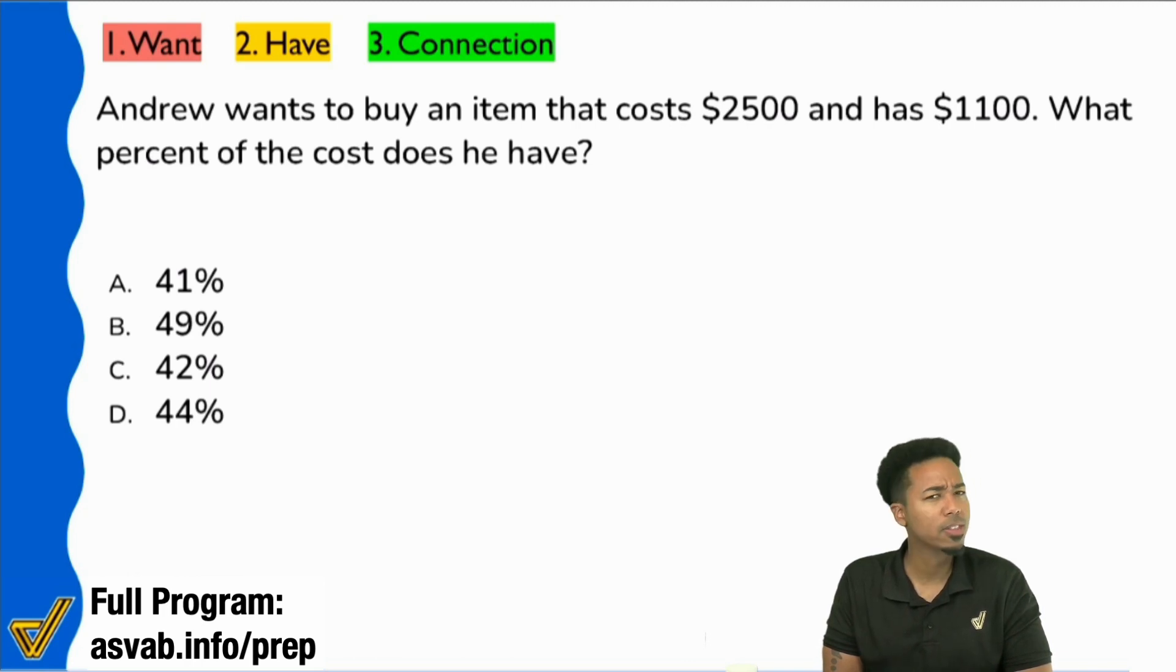Right, we're looking for a percent this time. Typically, we're trying to find the amount, right? Not always money, but we're trying to find that amount, either the beginning amount or the end amount, the original or the result. But this time, we're actually trying to find the percent. So that's the first difference you want to notice.